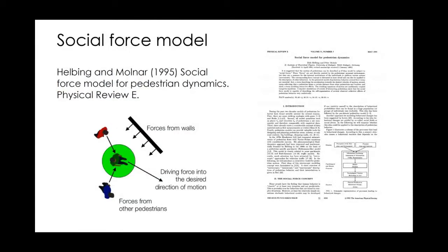The social force model was initially proposed by Helbing and Molnar in 1995. They published a paper in Physical Review E. Helbing is a European physicist, originally from Germany, working at ETH Switzerland. He's done plenty of work in traffic flow modeling on both the vehicular and pedestrian sides. The social force model is very physical — it really follows physical rules, very based on physics.